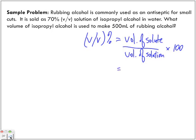What information are we given? We're given the percent, so we have 70%. Are we given volume of the solute? No, so that's what we have to find: X milliliters.